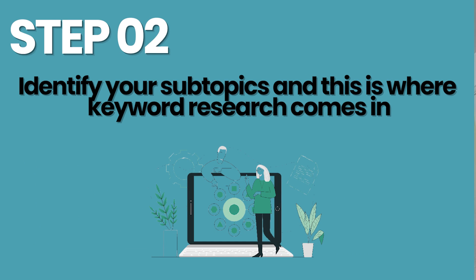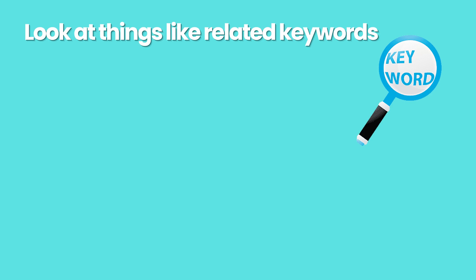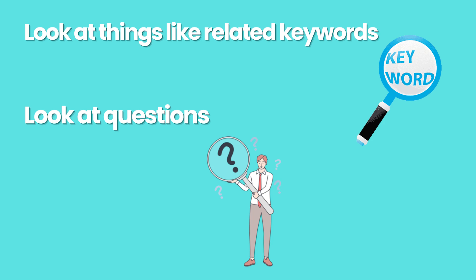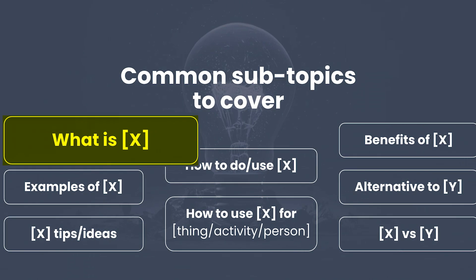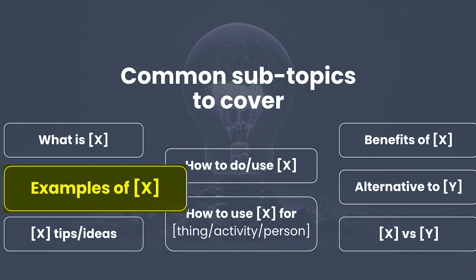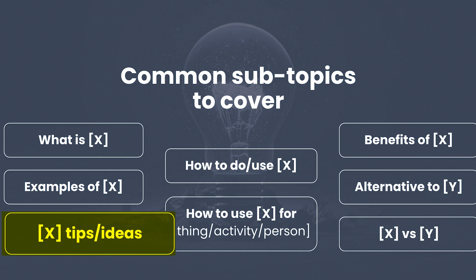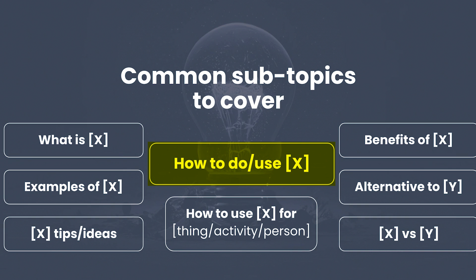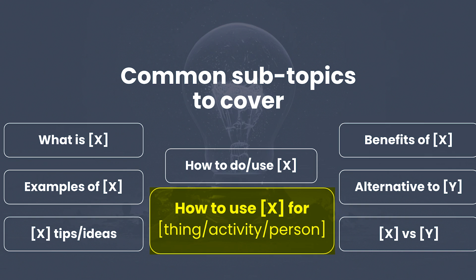Step two is identify your subtopics, and this is where keyword research comes in. You might want to do keyword research around your topic and look at things like related keywords, questions people are asking, people also ask data from Google, and popular keywords. Some common things that might come up within your cluster are things like 'what is X,' 'examples of X,' 'X tips and ideas,' 'how to do or use X,' 'what are the benefits of X,' and 'how to use X' for a particular activity, person, gender, work type, or hobby type.